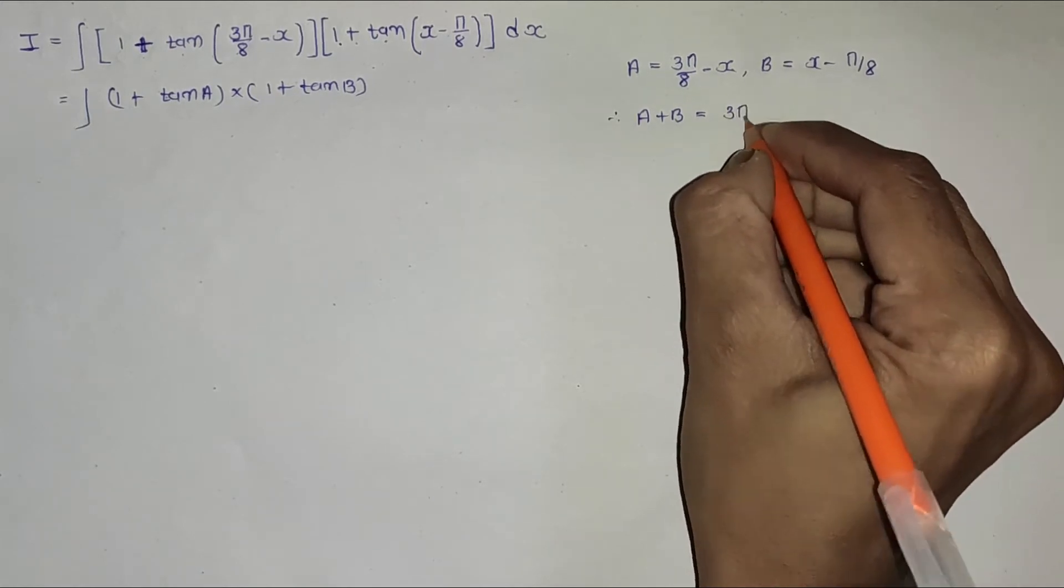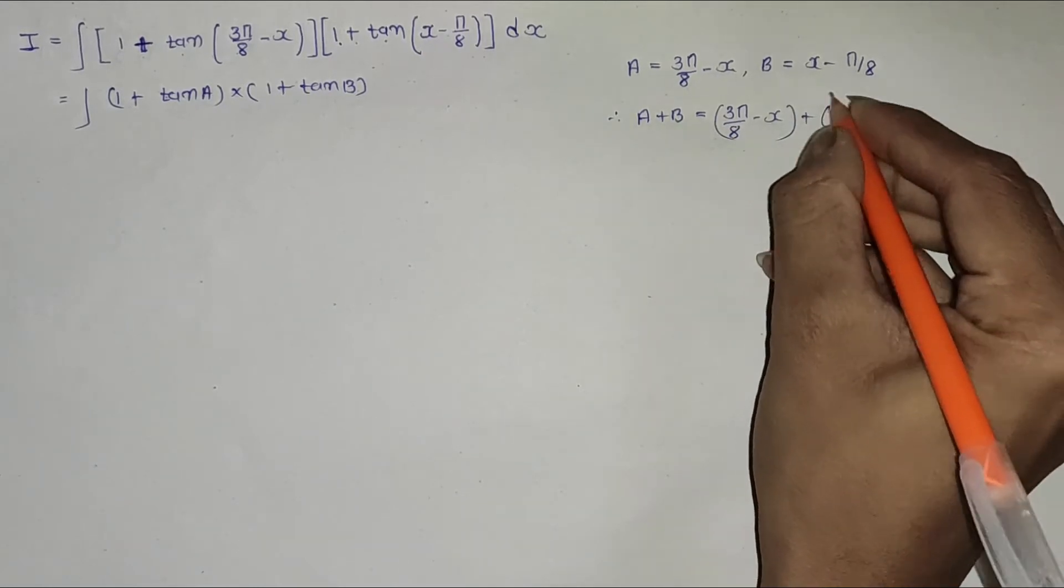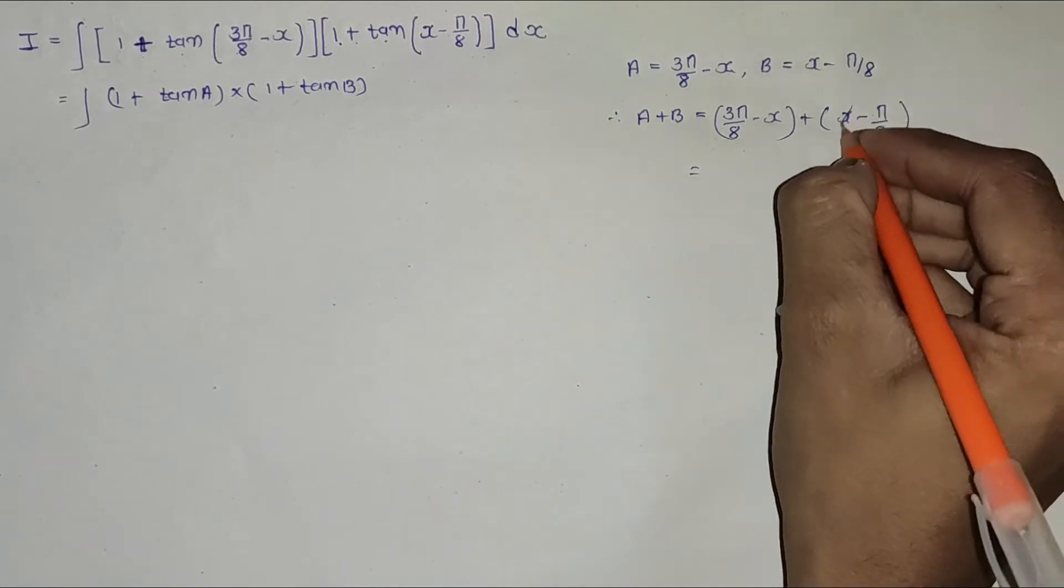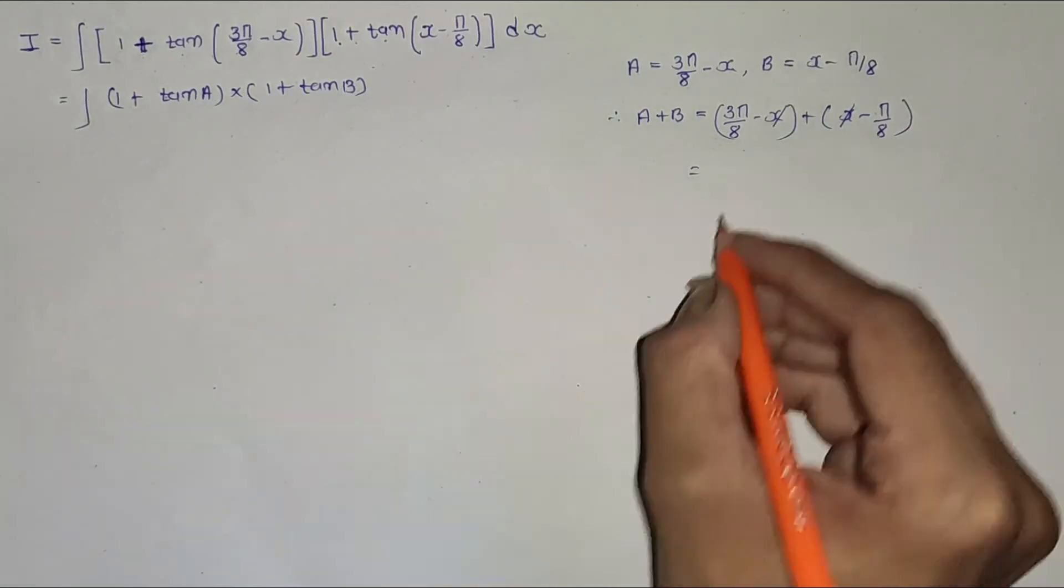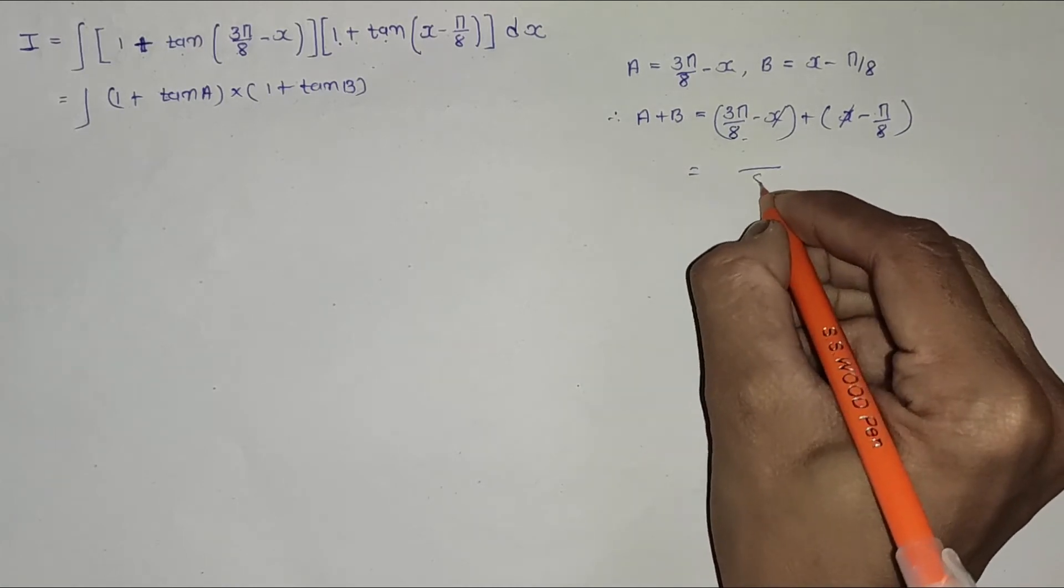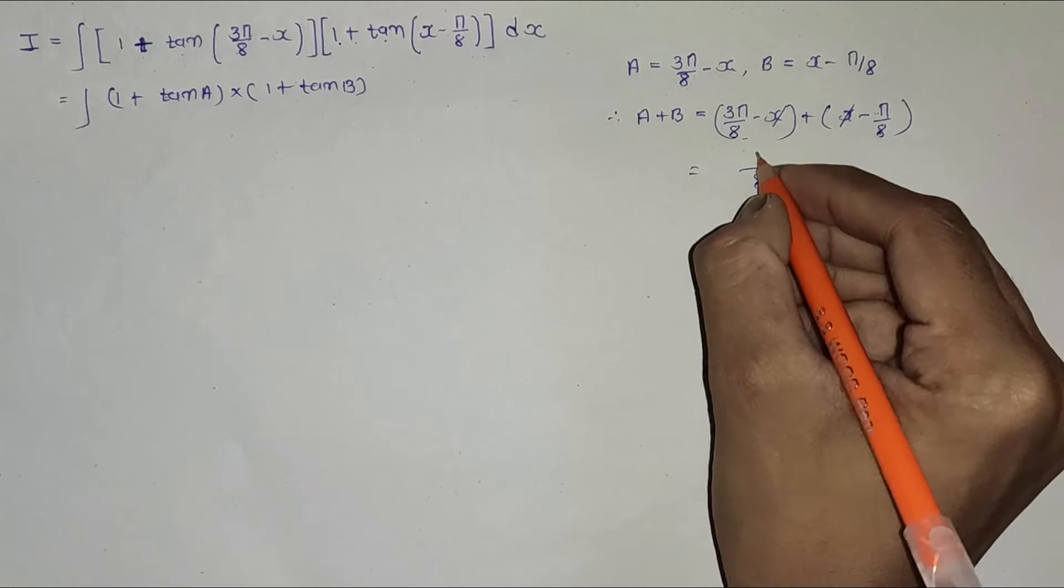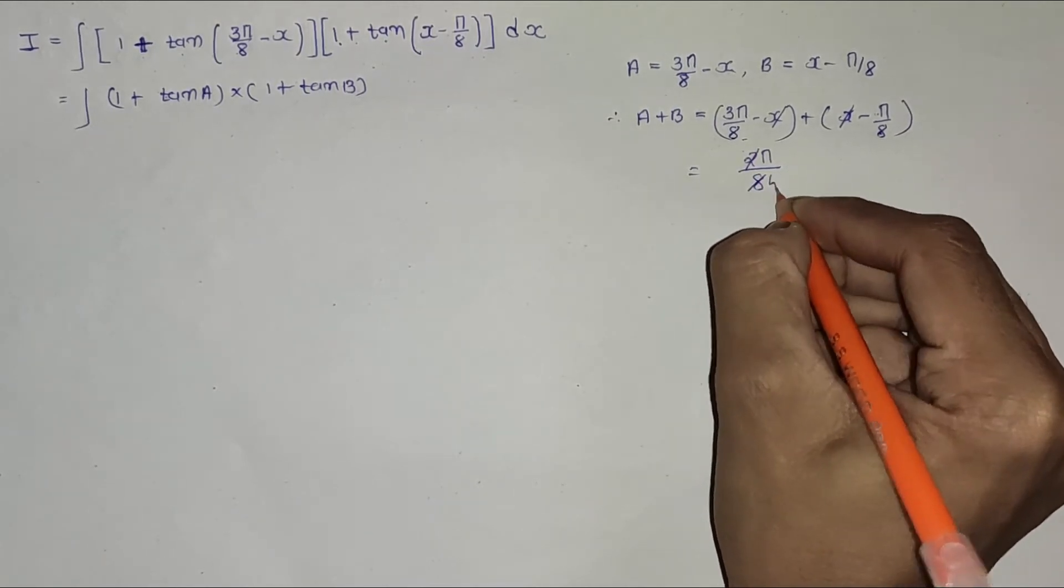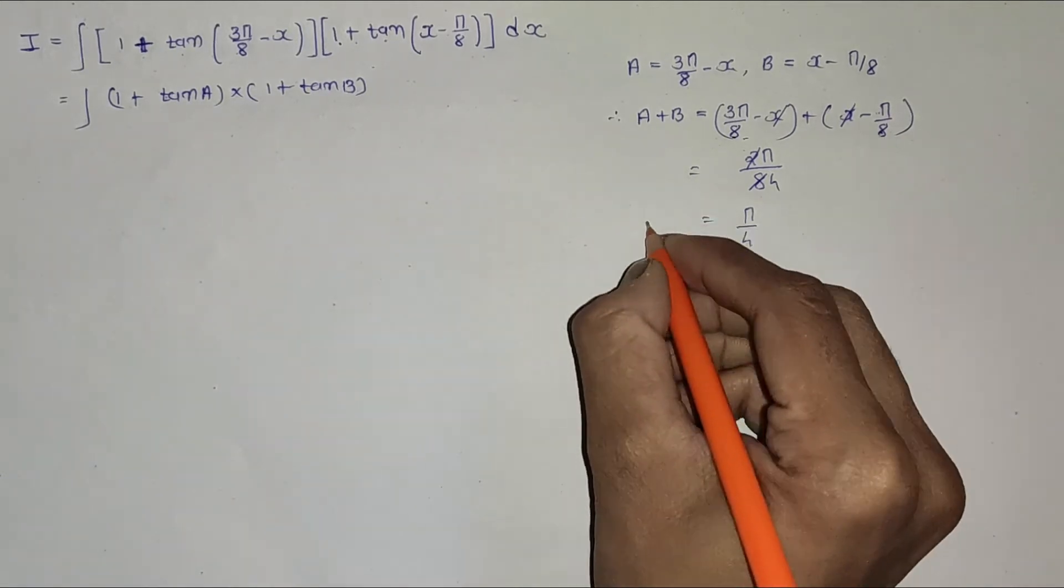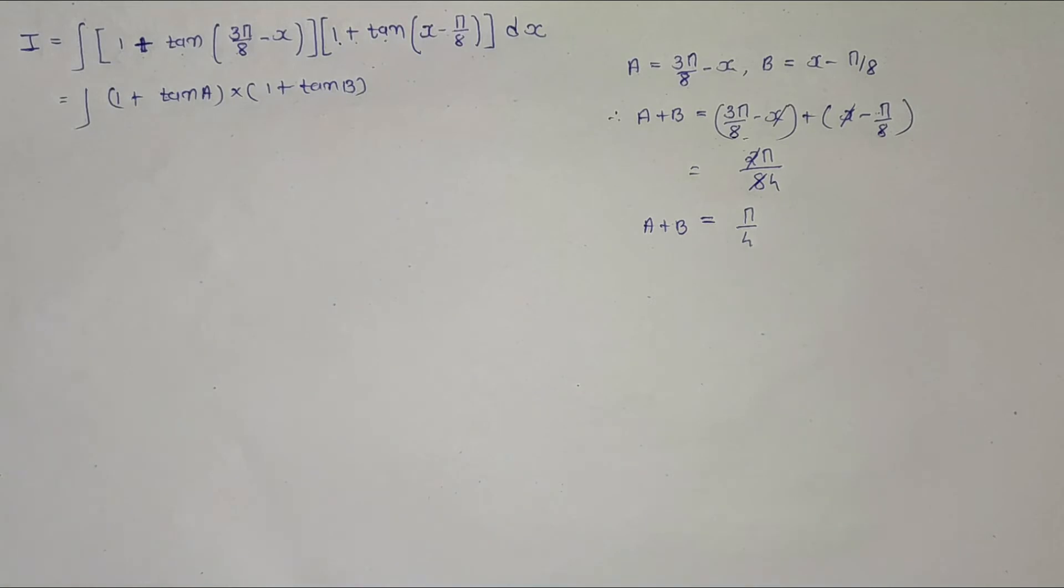Then x and x are cancelled here. The denominators are the same, so 8, and in the numerator 3π minus π, that is 2π, and 2π/8 equals π/4. So I get a plus b equals π/4.